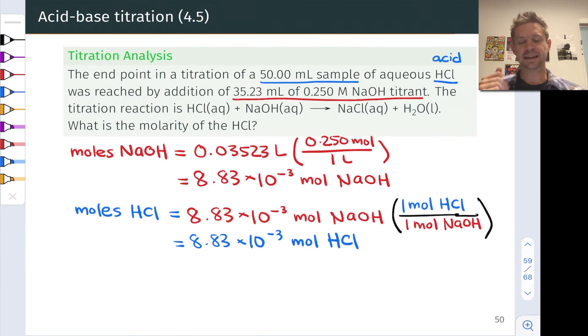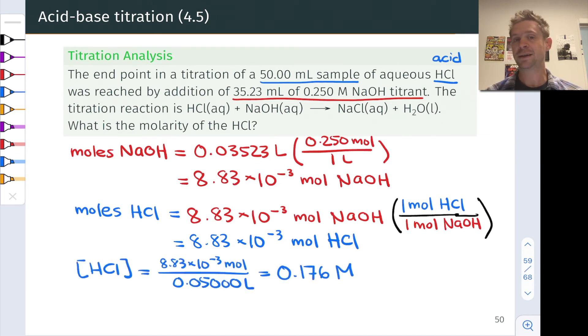We're interested in the concentration of HCl in that original solution. So we're going to take that number of moles and divide by the original analyte solution volume of 50 milliliters or 0.05000 liters. And this comes out to 0.176 molar.